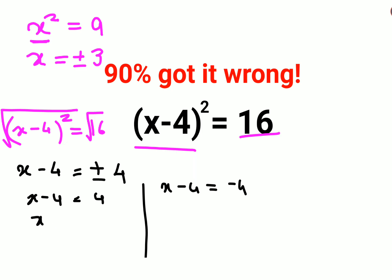So in this case we will add 4 on both sides. Here we will say value of x is 8, and here we will add 4 on both sides again. So minus 4 plus 4, here we will get the value of x as 0. Therefore we can say the value for x is either 0 or 8.